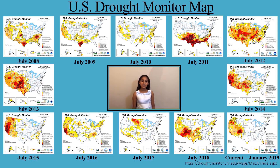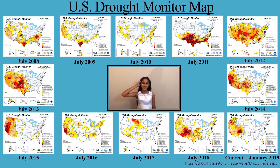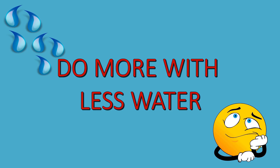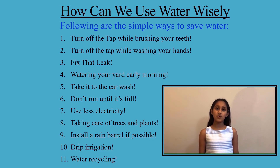For example, in 2011, Texas and the surrounding states received less rainfall than normal. In 2014 and 2015, California and the surrounding states received less rainfall than their average. Therefore, it is difficult to predict how much rain or snow we will get in the coming years. We need to use water wisely. Please do more with less water as much as you can — for the place where we're living and to save the planet, we need to use water wisely.